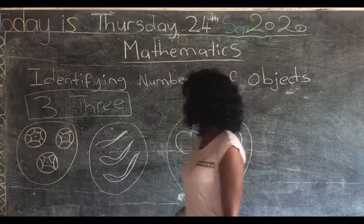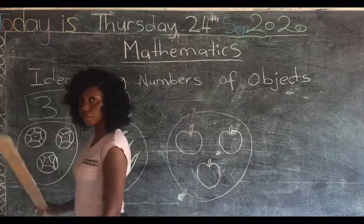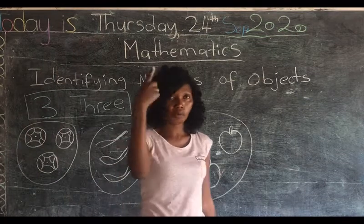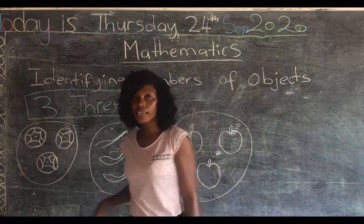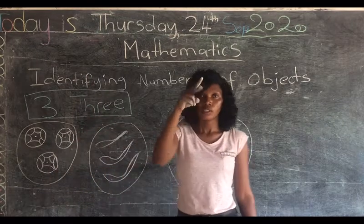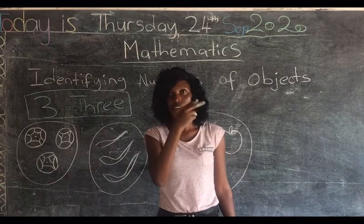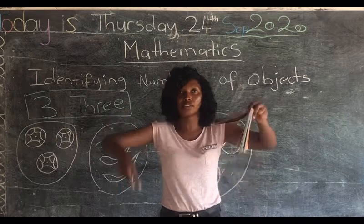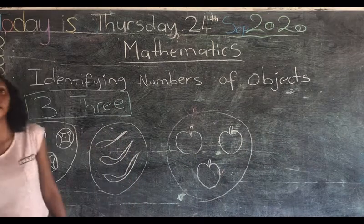Remember we talked about number one, which is O-N-E, 1. I showed you one finger, and we know there are things that come in one, like your nose — you have one nose. I talked about number two: two fingers. We see things that come in two — we have eyes, lips, hands, and legs that come in twos. Two spells T-W-O, 2.